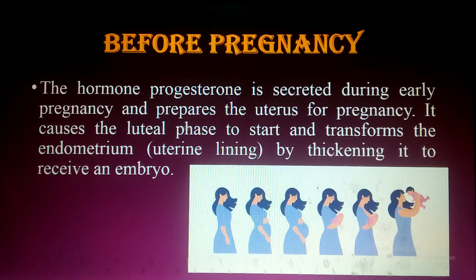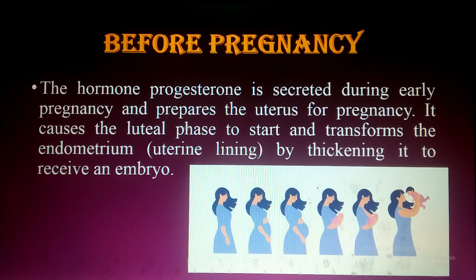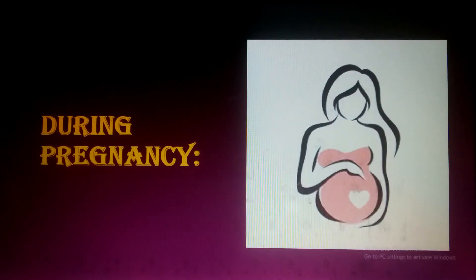Before pregnancy, progesterone is secreted during early pregnancy and prepares the uterus. It causes the luteal phase to start and transforms the endometrium by thickening it to receive an embryo — that is, to prepare for embryo implantation.